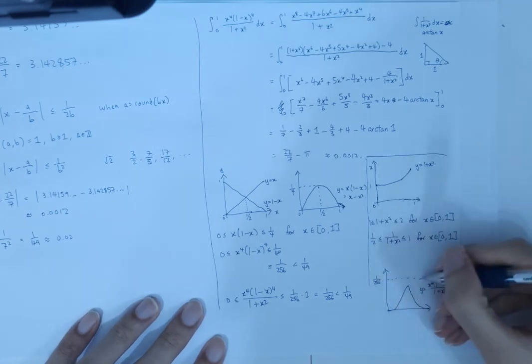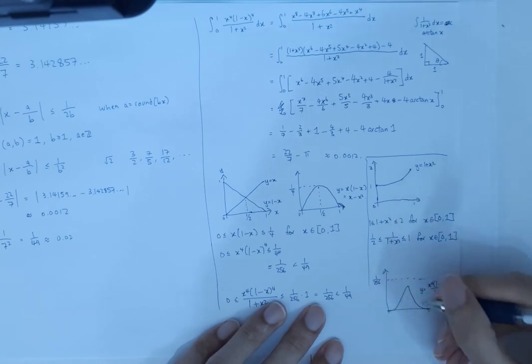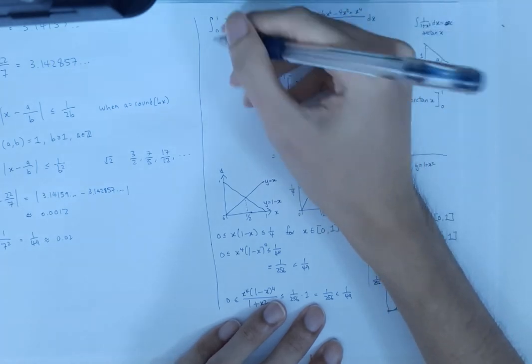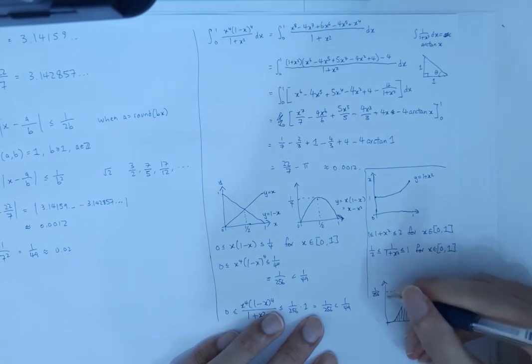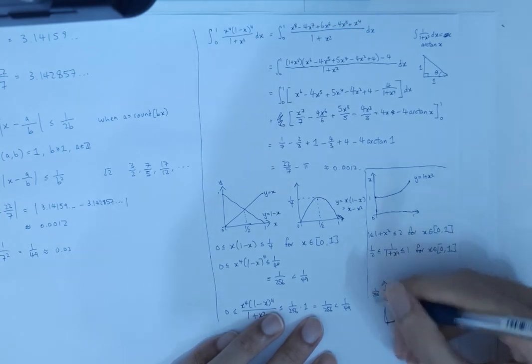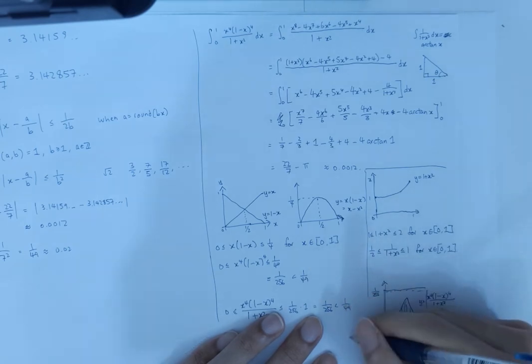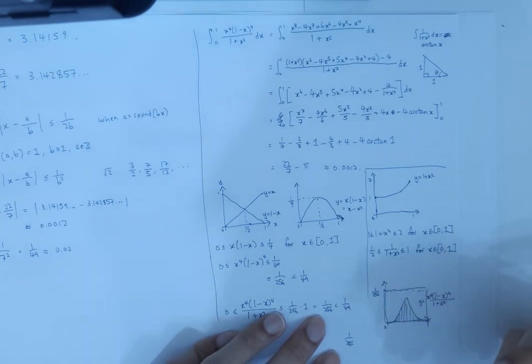So the area underneath this thing, which is the integral over here, has to be at most the area of the whole rectangle here. And the area of this rectangle is 1 over 256 multiplied by the width of the interval, which is 1. So this is just 1 over 256.